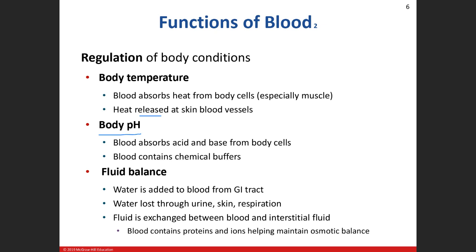Body pH: your blood has what we call buffers that prevent major pH shifts. Your normal average value for the pH of your blood is 7.4 — it's close to neutral, slightly on the base side. The scale we use is 7.35 to 7.45, so 7.4 is right in the middle. Your body is always trying to maintain that value. To keep it in that range, it has these blood buffers. There was a reason you had to learn buffering back in Chapter 2.